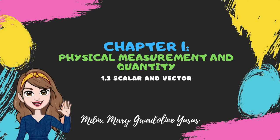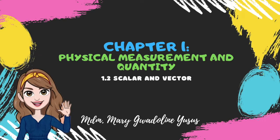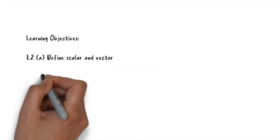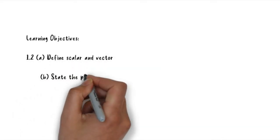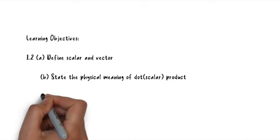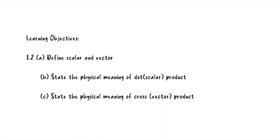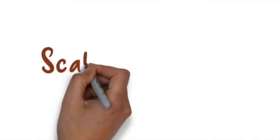Hello everyone, welcome back to our second video in which we're going to cover our second subtopic: scalar and vector. Here are the learning objectives that we need to achieve. First, to define scalar and vector. Second, state the physical meaning of dot or scalar product. And the last one is to state the physical meaning of cross or vector product.